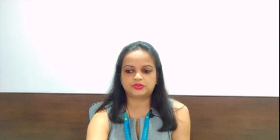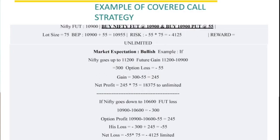In the reverse scenario, when Nifty goes down — let's say to 10,600 — the future loss comes to 300 points because we bought at 10,900. But the option profit goes up: 10,900 minus 10,600 minus the 55 premium paid gives a net option gain of 245 points. The loss in the future is 300, and the profit made in the option is 245, so we end up with a net loss of just 55 points, which is 55 into 75 — a loss of only 4,125 rupees.